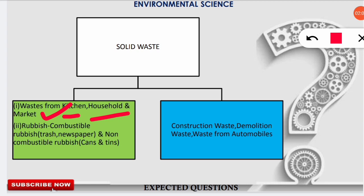The other category is waste generated from construction waste, demolition sites, and waste from automobiles. Waste from kitchen, households, and markets can further be divided into two categories: combustible rubbish such as trash and newspaper, and non-combustible rubbish such as cans containing oil and grocery items, and tins used for cold drinks and other items. These are the main segregations and divisions of solid waste.